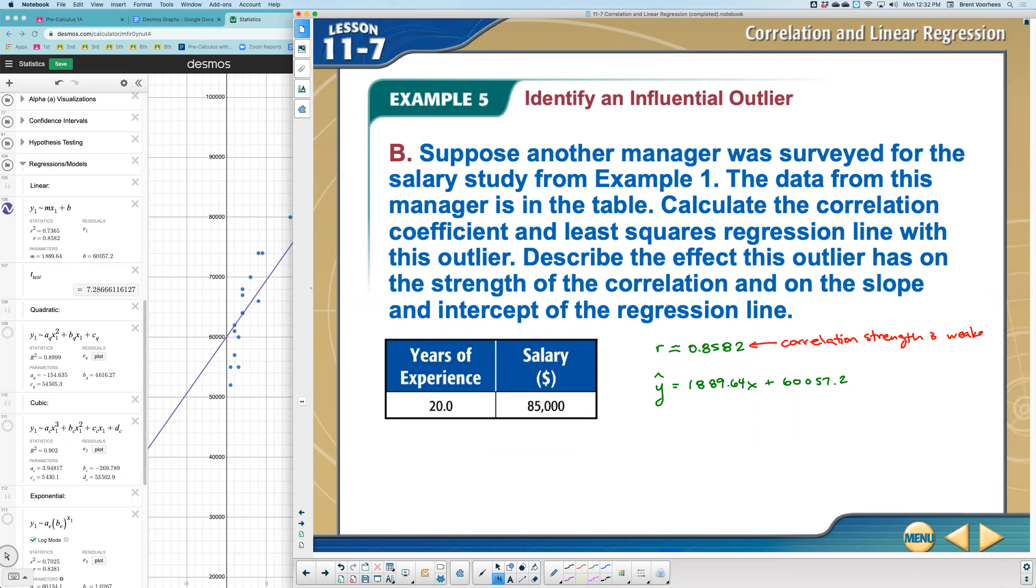Now I would still say it's a strong relationship because it's greater than 0.8. So the textbook actually goes to like 0.7, but I kind of go off of 0.8 being strong. And so it is weaker. It's still strong, but it's weaker.